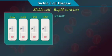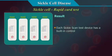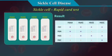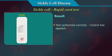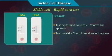Results: Each sickle scan test device has a built-in control. A dark blue coloured line in the detection window at the control line is considered an internal positive procedural control. The control line will appear if the test procedure has been correctly performed. If the control line does not appear, the test is invalid and a new test must be performed. If the problem persists, please contact your local vendor.